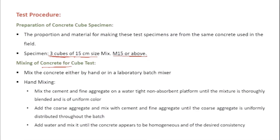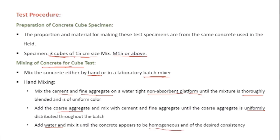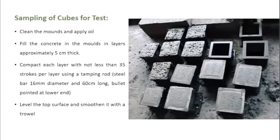Concrete has to be mixed properly to make three cubes. You can mix by hand or by laboratory batching mixers. In case of hand mixing, first cement and fine aggregate are mixed on a non-absorbent platform thoroughly, then coarse aggregate is added and mixed again, then water is added to get a homogeneous concrete of desired consistency.